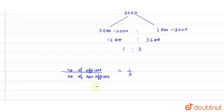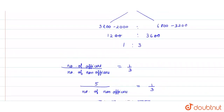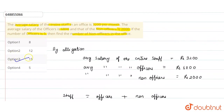So, number of officers upon number of non-officers equals 1 upon 3. Since the number of officers is 5, by cross multiplication, the number of non-officers is equal to 15.